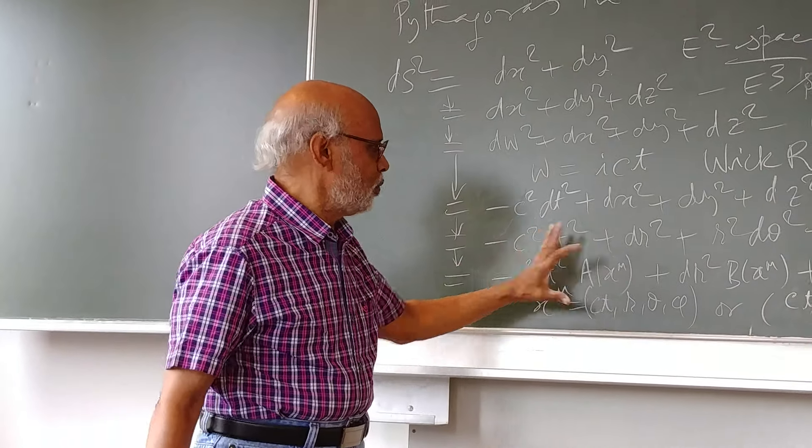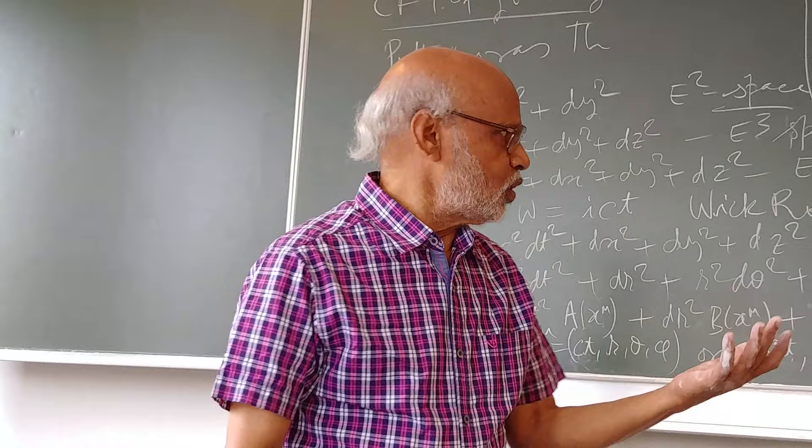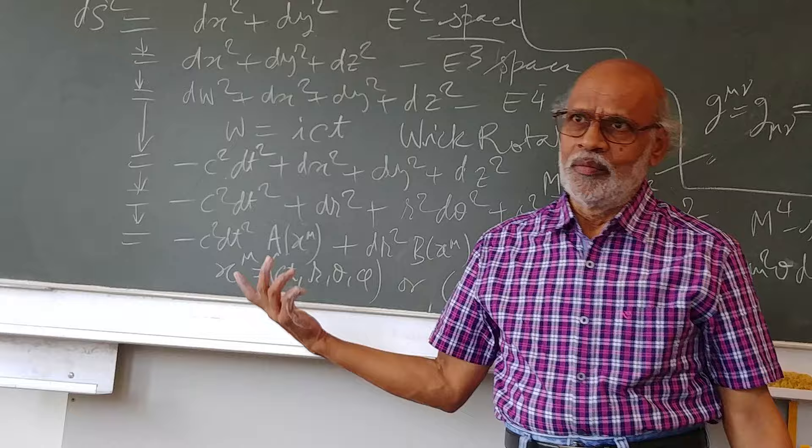You don't have to bring in time into this. For Riemannian space it could all be x, y, z, and so on. Euclidean or Minkowski, so if you take one of them like that, then this is the Riemannian geometry.